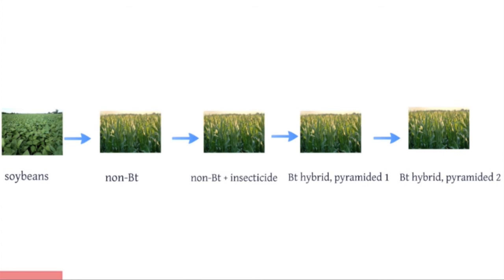Scientists and extension faculty from Iowa State University are recommending a five-year rotation that maximizes the number of years that corn is grown. This rotation plan includes rotating to soybeans in year one — eliminating corn for just one year will do wonders in terms of diminishing corn rootworm populations — going to non-BT corn in year two, including non-BT corn with insecticides applied at planting in year three but only if adult beetles were present in the field during year two, and then going to BT hybrids in years four and five with different and ideally stacked traits used in both years.